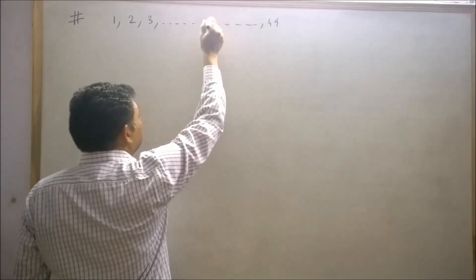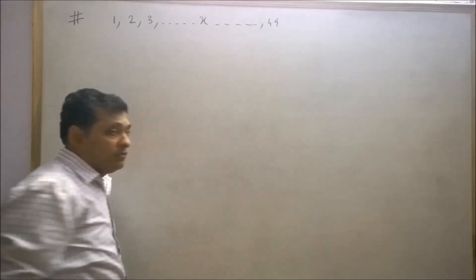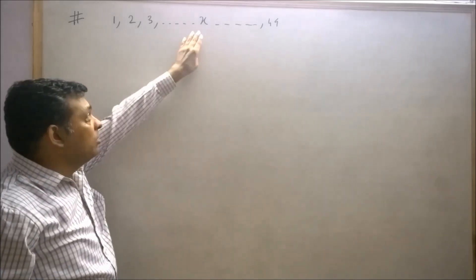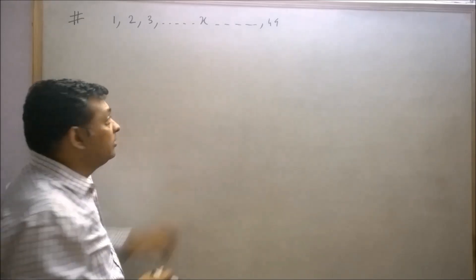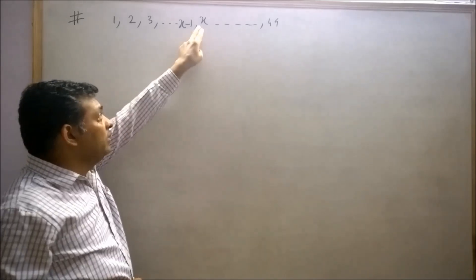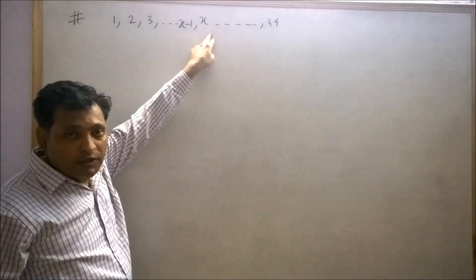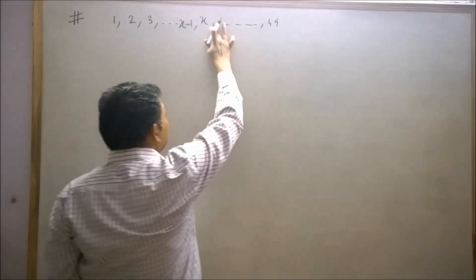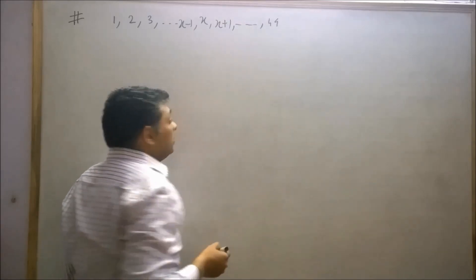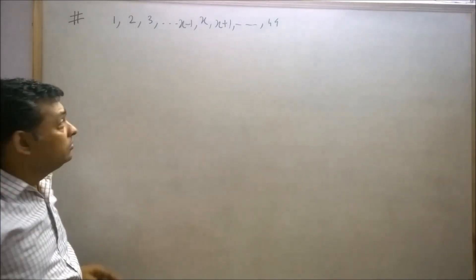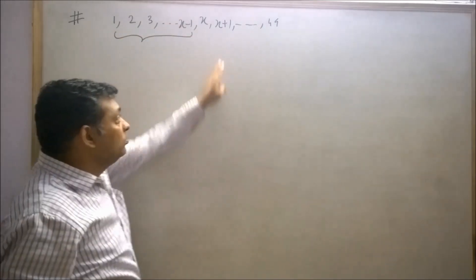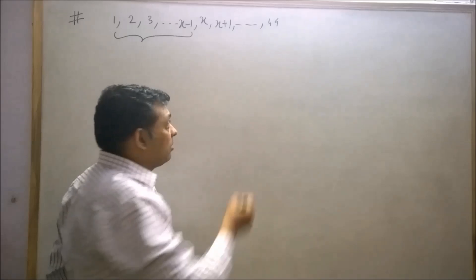Let's say there is house number x. Since all these numbers are natural numbers, the house number preceding this house will definitely be x-1, and the house number just after this house will be x+1.